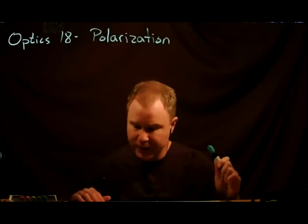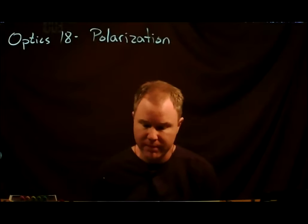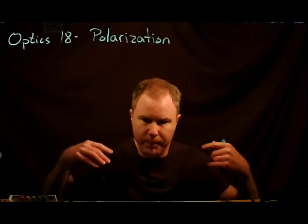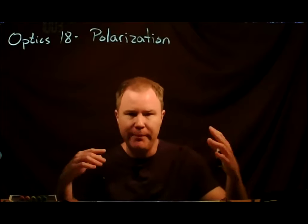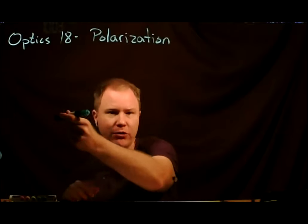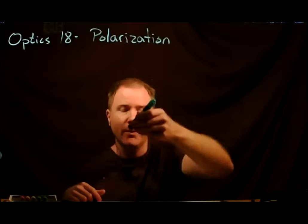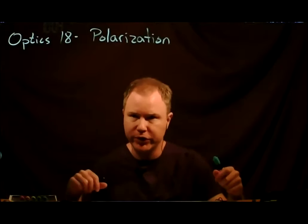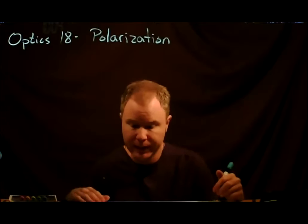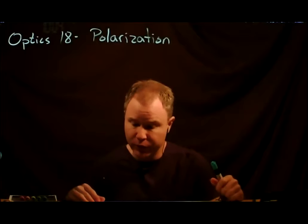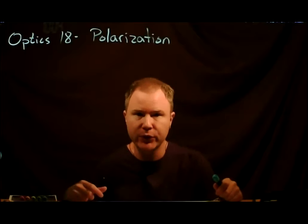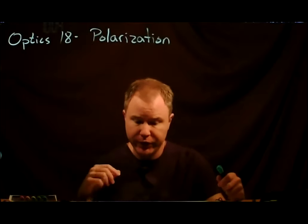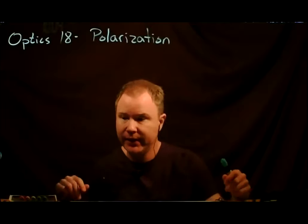Up until now, we've really only considered waves of one polarization — to the extent we've even thought about the electromagnetic field as a vector field. All the pictures we've shown of amplitudes assume that all of the amplitude is in, say, the x direction. The beam propagates in the z direction and the wave oscillates either up and down in y or in and out in x. We've assumed all waves are polarized in one direction and haven't had to worry about the vector nature of the electromagnetic field. But today, we'll start to look at the vector nature of the field.